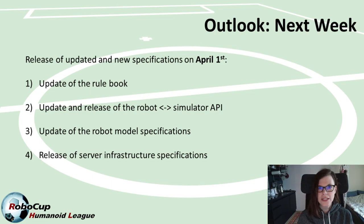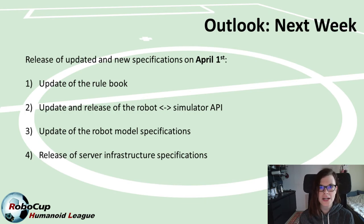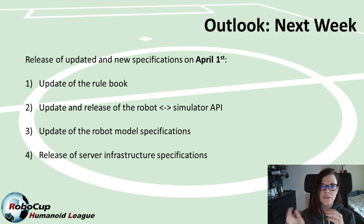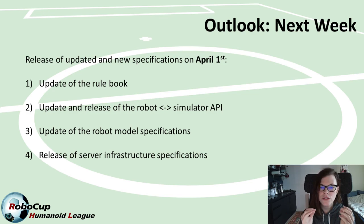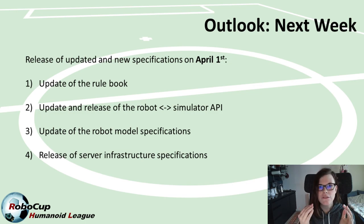The last document we are planning to release is the first version of the server infrastructure requirements. We have not yet finalized the decision on where exactly we'll host the competition, as there are still several options being explored in parallel. However, we have put together a document summarizing the parameters that will stay fixed no matter which implementation we choose. You'll find first details on how to submit and run your robot control software during the competition, how to retrieve your log files and the official log files — the first draft of this will also be released on April 1st.